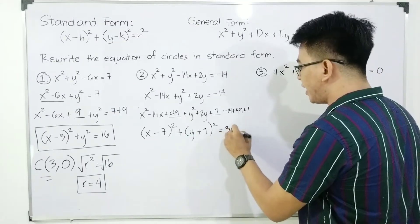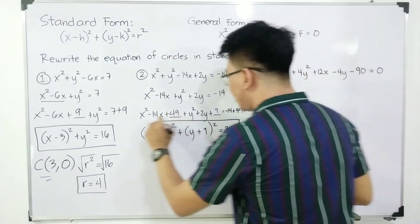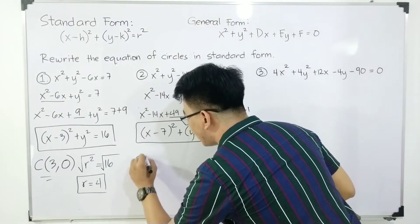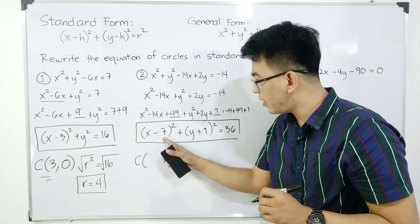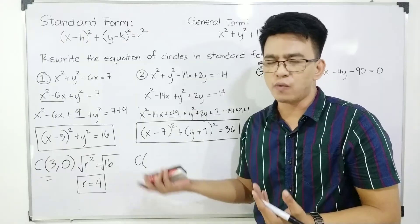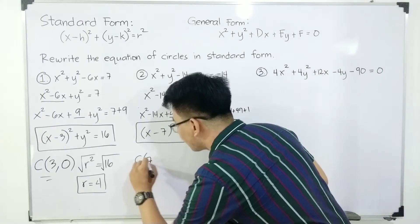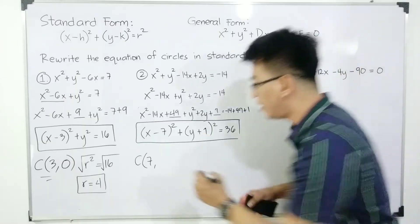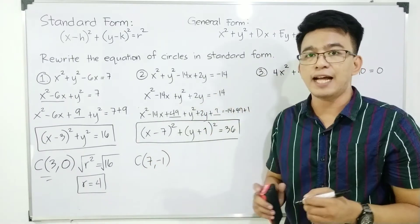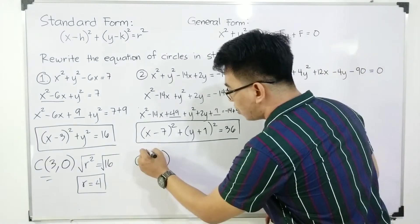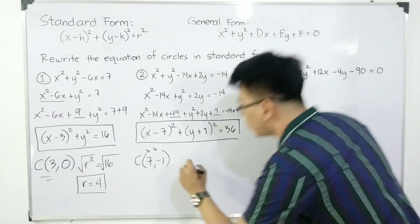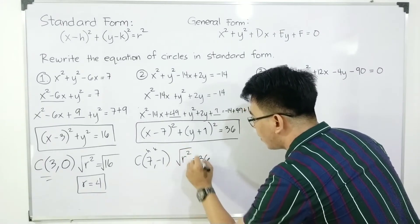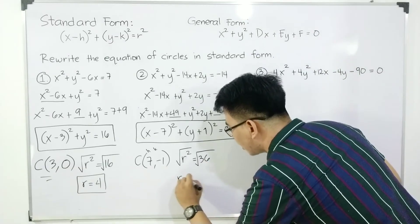The x trinomial factors as x minus 7 squared. For y, the square root of y squared is y, the square root of 1 is 1, and we copy the addition sign, giving y plus 1 squared. On the right side: 49 plus 1 is 50, minus 14 gives 36. So the standard form is x minus 7 squared plus y plus 1 squared equals 36. The center is at (7, negative 1), and r squared equals 36, so the radius r equals 6.